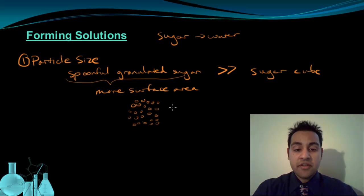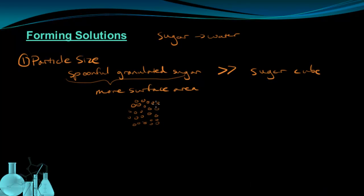So a spoonful of granulated sugar would have particles that look like this. Each one has its own surface area. If we compare that to the sugar cube of approximately the same size, the surface area of the sugar cube is only this area along the outside. Whereas the granulated sugar has significantly more surface area because all these inside areas are exposed. And if there's more surface area to deal with, there's more interactions with the solvent, which will allow it to dissolve more easily and more quickly.